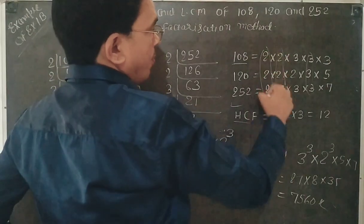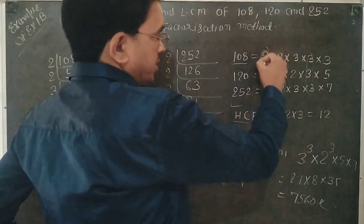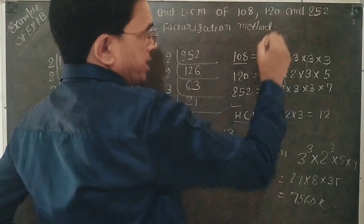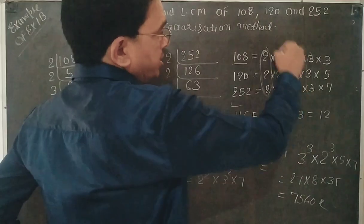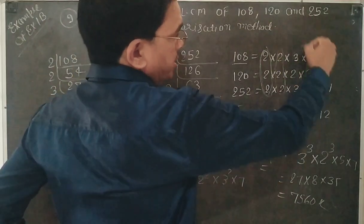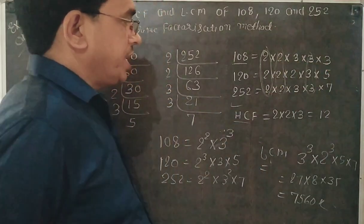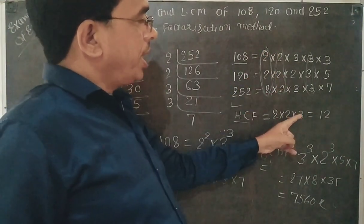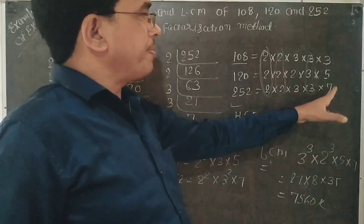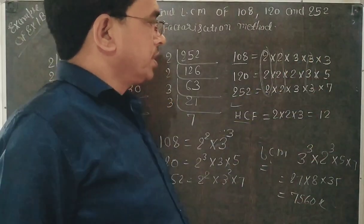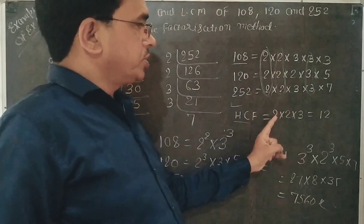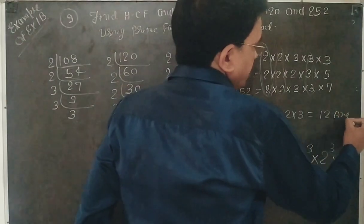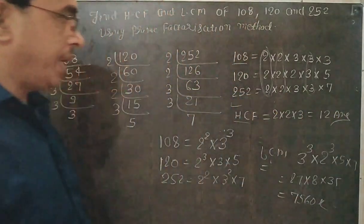HCF is the common factor among all three numbers. 2 is present in all three numbers. Again, 2 is also present in every term. 3 is present in every term. But 7 is not present in all, and 5 is not present in all. So the common factors are 2 × 2 × 3, which equals 12. That is the HCF, found by the prime factorization method.